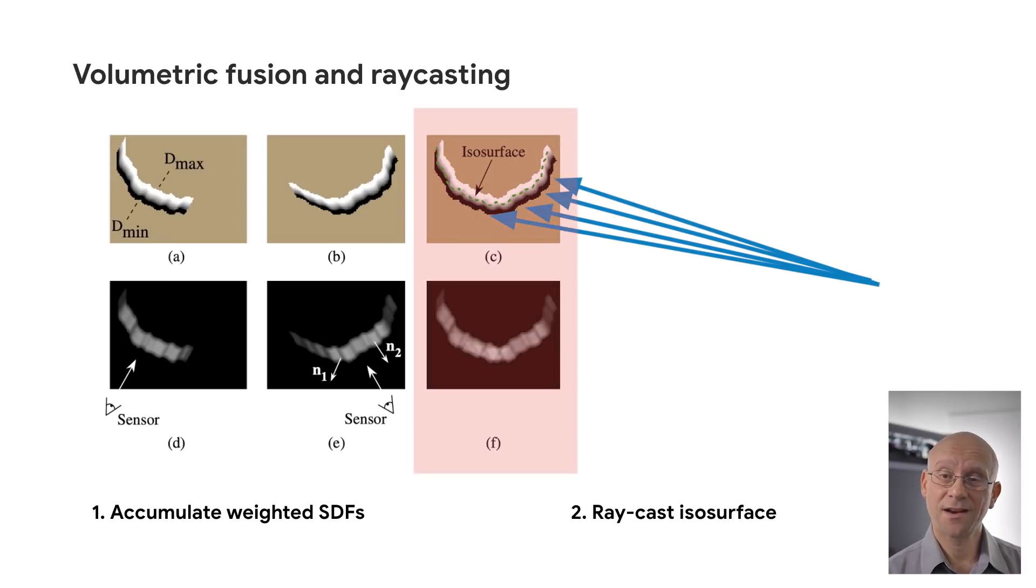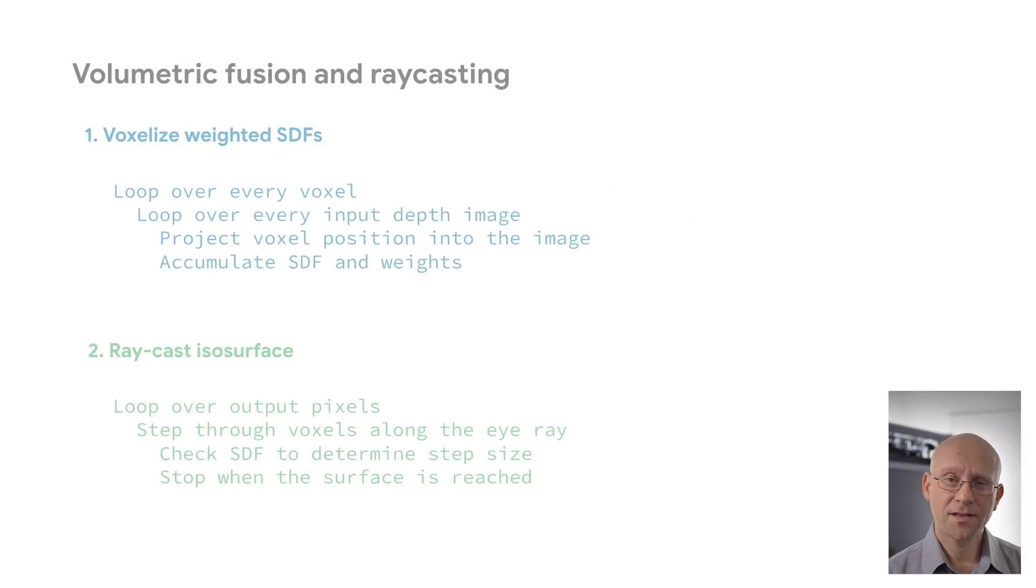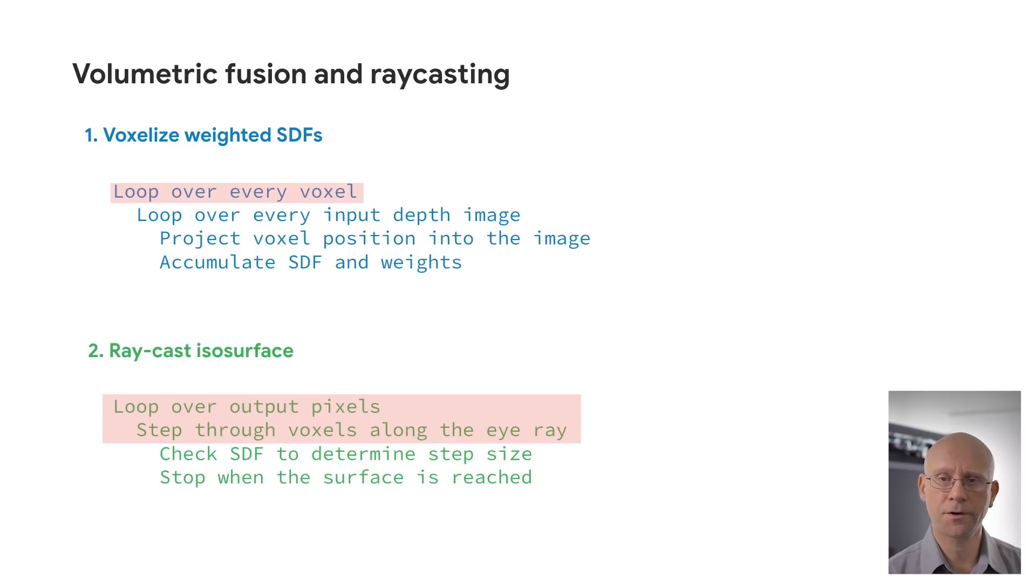However, it still requires a lot of GPU memory to store that voxel grid and a lot of memory bandwidth for the raycasting kernel to retrieve it. By examining the pseudocode for this two-pass algorithm, we make some observations. First, it's making two passes over most voxels, just in a slightly different order, and second, we only fuse three depth images for each voxel, so the inner loop here is very fast.